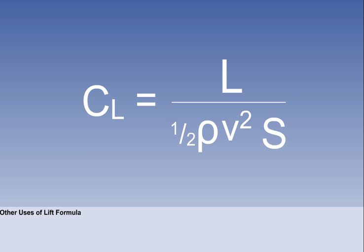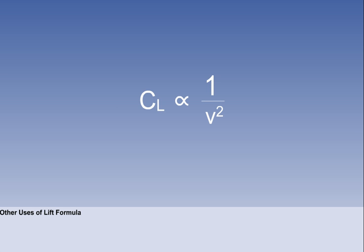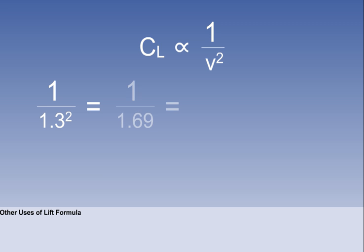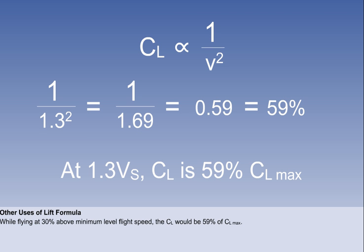Since density, lift, and wing area are constant, this can be written as CL is proportional to 1 over V squared. 30% above can be written as 1.3. So 1 over V squared becomes 1 over 1.3 squared. This equals 1 over 1.69, which is 0.59 or 59%. So, while flying at 30% above minimum level flight speed VS, the CL would be 59% of CL max.